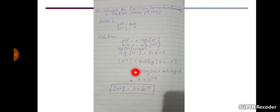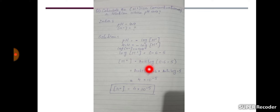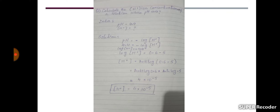Now break minus 4.4 into two values: 0.6 minus 5. Shift the log toward 0.6 minus 5 — it will convert to antilog. We have to find the antilog of 0.6 and the power of minus 5. The answer will be 4 × 10⁻⁵. So the hydrogen ion concentration is equal to 4 × 10⁻⁵.